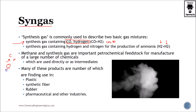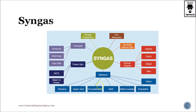Why? Because they are the building blocks — they have carbon material, hydrogen material, and oxygen can be obtained either from the oxides or most likely from oxygen gas. They will be used to produce intermediates and later on other petrochemicals. Now, which types of materials are produced by syngas? Well, end products include plastics, synthetic fiber, rubber, pharma, and other industries.